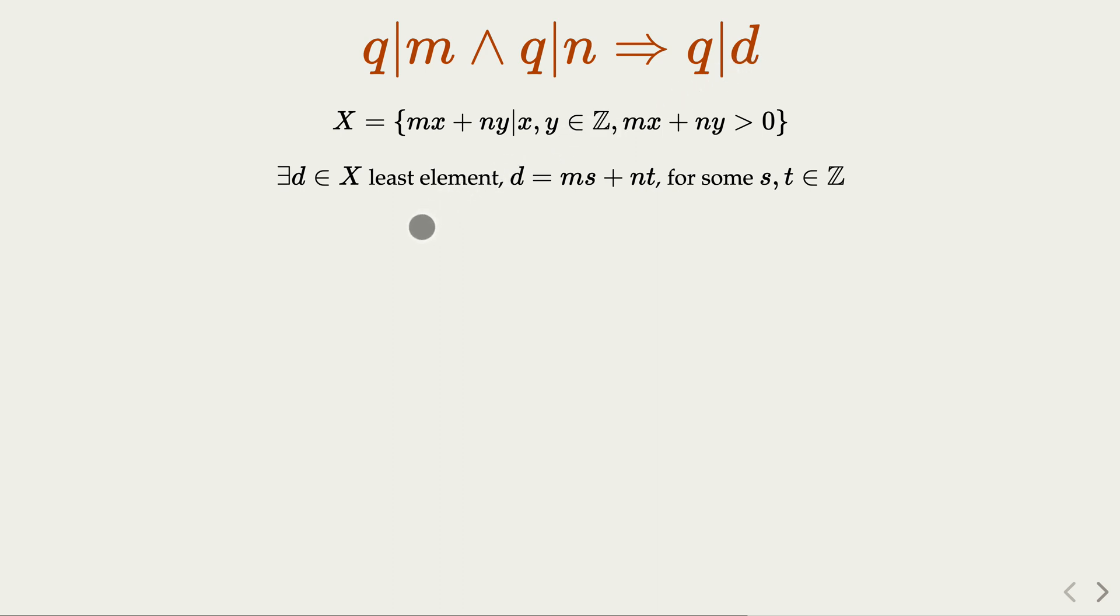Now this proof would be straightforward, because what is d? d is a linear combination of m and n.